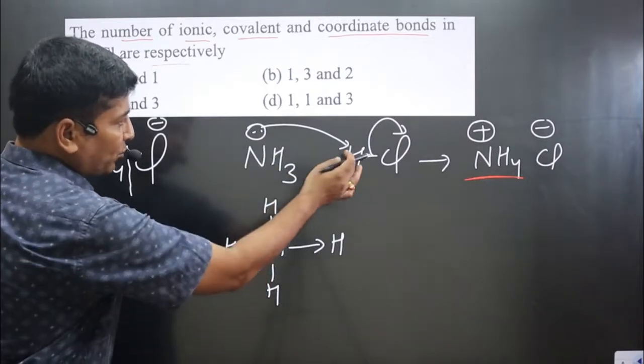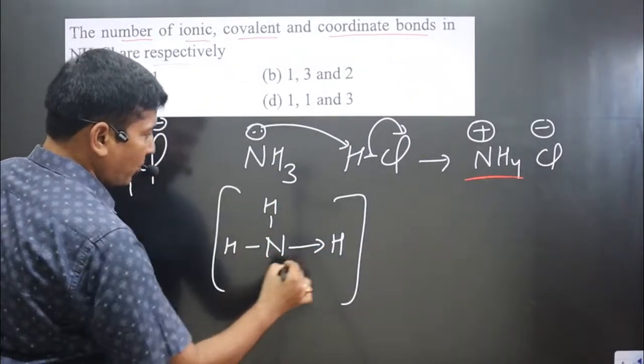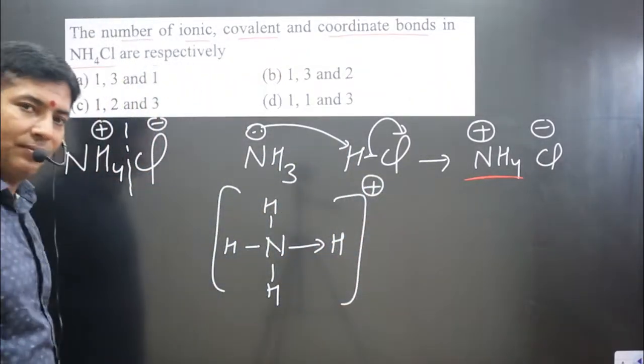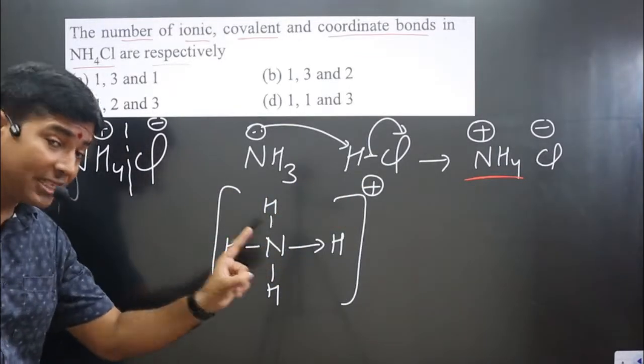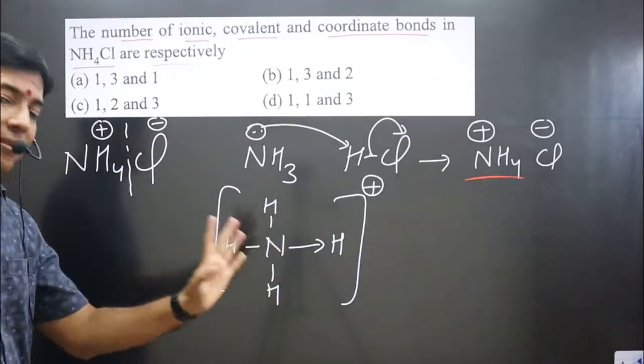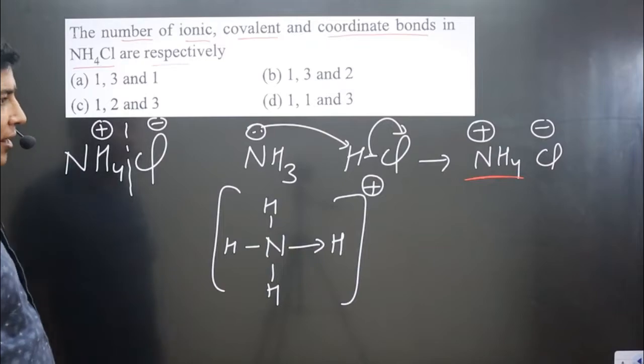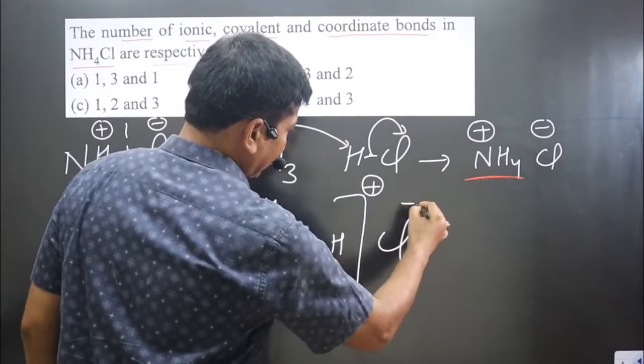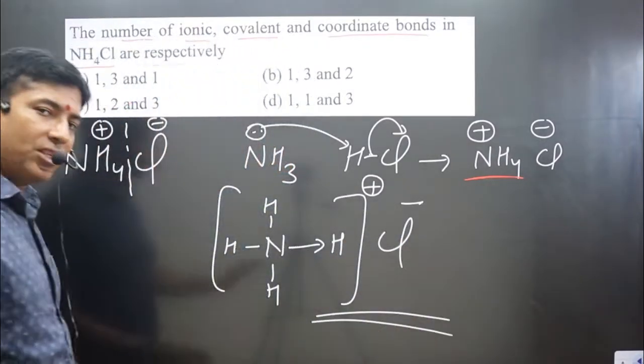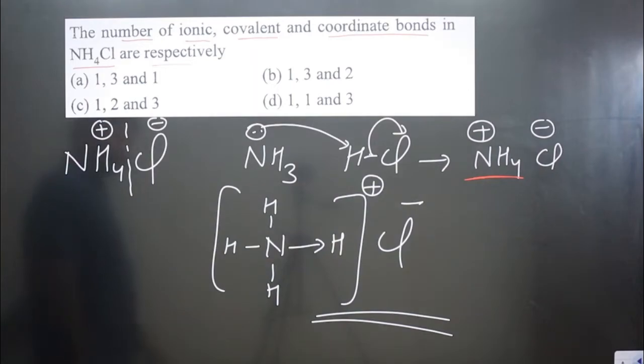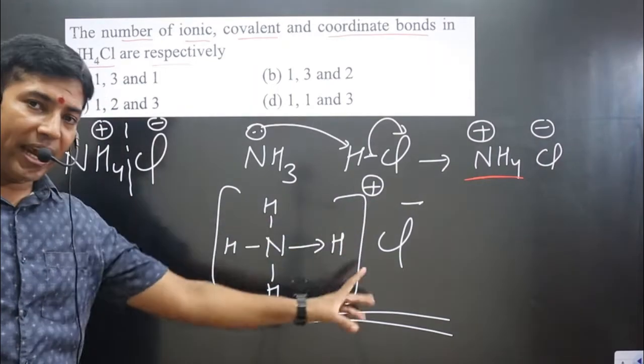Since nitrogen is losing electron pair, we mention positive charge over here. This positive charge belongs to the central element, not to the group atoms. Then we have Cl- ion. This is the structure we have for ammonium chloride. So we got one ionic bond.